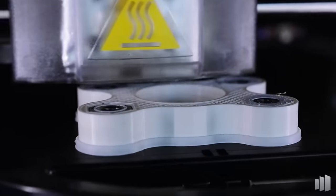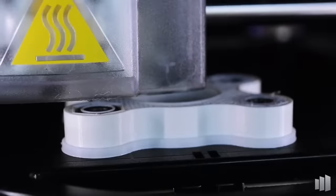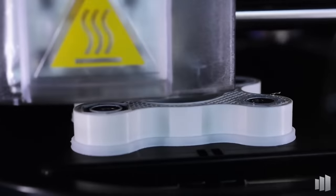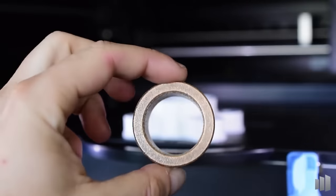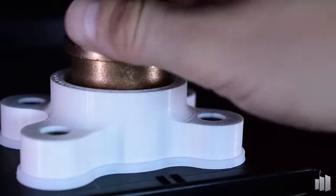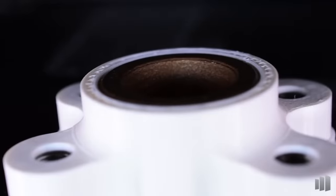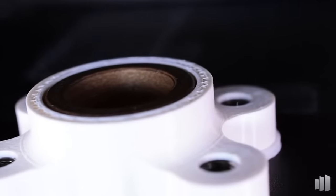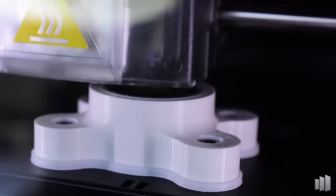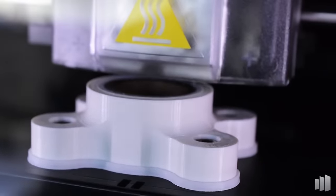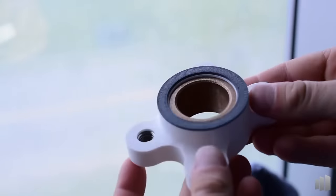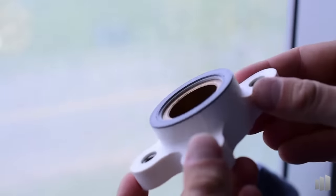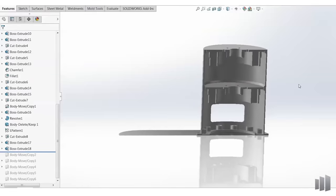So next time you need repeatable, strong threads in a 3D printed part, consider this option. Also in this part, a fully captured bronze bushing. Insert, press it in, print right over it. Again, the idea here is to recognize that you aren't just limited to plastics when 3D printing. You can still use and incorporate your metal, plastic, and composite hardware into 3D printed parts to get the best of both worlds.